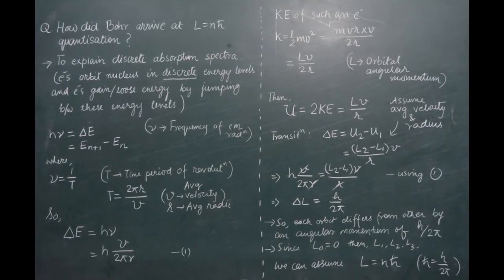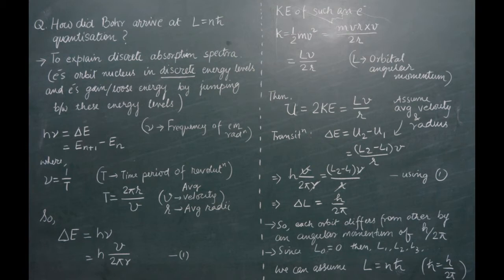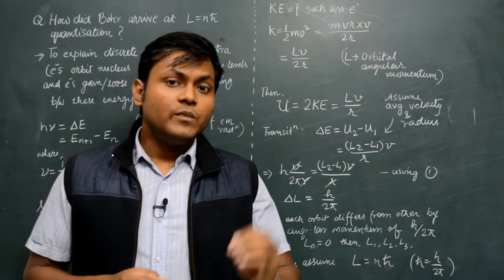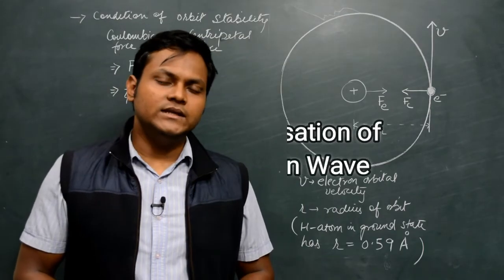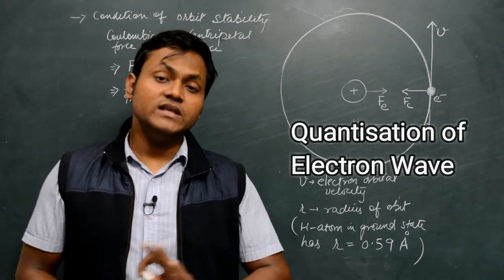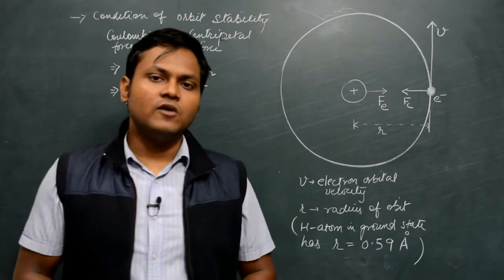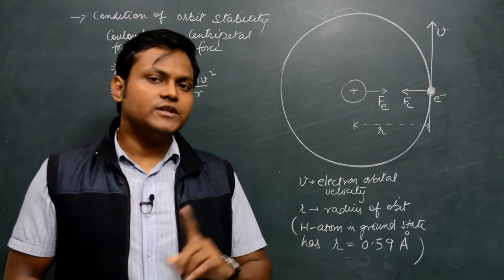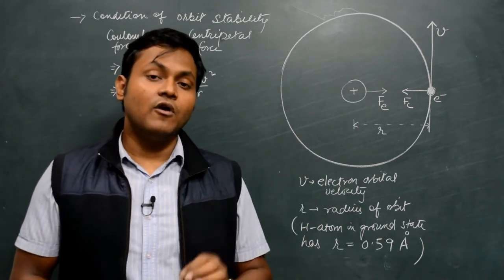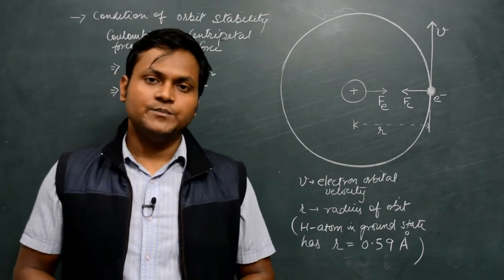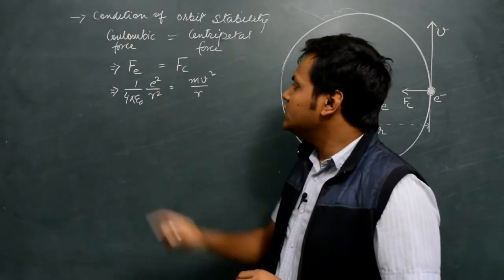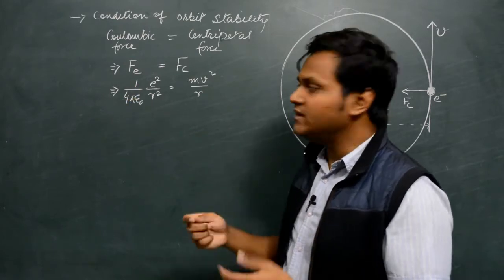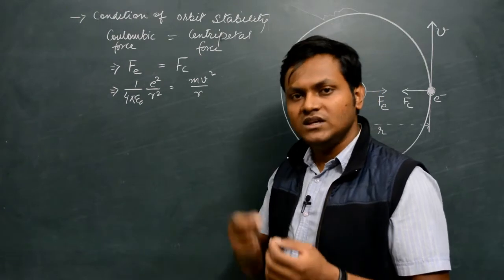Now Niels Bohr did not arrive at this quantization principle randomly — he came about it just so as to explain the nature of the absorption spectrum. Before we talk about the quantization of the electron wave as a general principle, let's look at a small example. I have taken the example of a hydrogen atom in its ground state. According to the planetary model, the electron is revolving around the hydrogen nucleus in a circular orbit, and the condition for the stability of this orbit is given by the equation where the Coulombic force between the electron and the proton provides the necessary centripetal force.